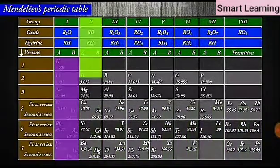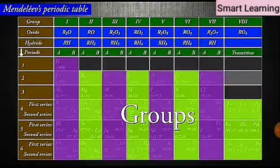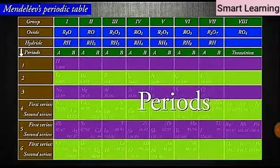Mendeleev's periodic table contains vertical columns called groups and horizontal rows called periods.